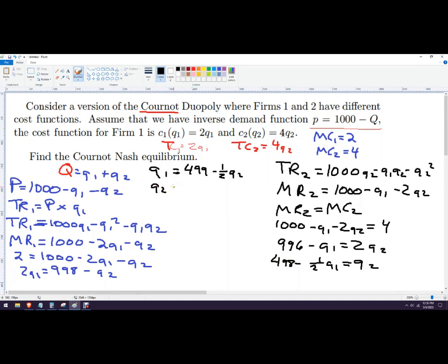So Q2 is 498 minus 1 half Q1. So here's our two response functions, and now we just need to solve for both. So we can just plug one into the other. So we'll do that on a different screen.